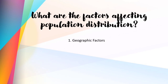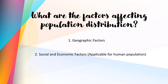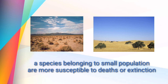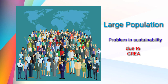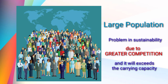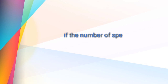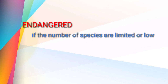First, we have geographic factors, which include climate, temperature, and rainfall. Next is social and economic factors, which is only applicable to human populations. And the last one is demographic factors. A species belonging to a small population is more susceptible to deaths or extinction caused by floods, diseases, etc. Large populations, however, have their own problem, and that is sustainability — there can be greater competition among resources. If the population continues to grow, it exceeds the carrying capacity of the environment. If a species is in danger of extinction, meaning their number is limited or low, then they are said to be endangered. Threatened species are in danger of becoming endangered species. A species is said to be extinct if the last individual belonging to that species is gone forever.